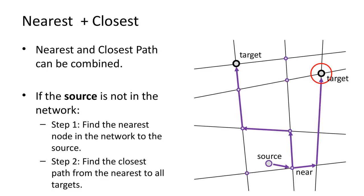The nearest function can also be combined with closest path. In the example, there is a single source with multiple targets. The aim is to find the closest target to the source. However, in this case, the source is not part of the network. The first step finds the closest network node to the source, then finds the shortest path to all targets and selects the shortest one.